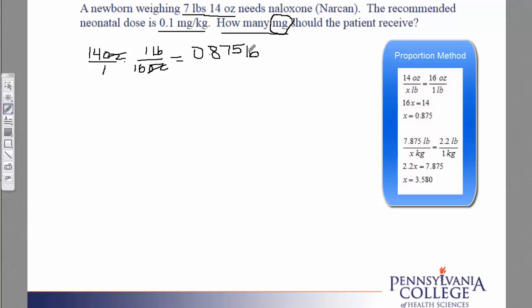Next, we need to take the weight in pounds and convert it to kilograms, because the order, or recommended dose, is per kilogram. So the infant weighs a total of 7.875 pounds. And we get this number from adding the whole number of 7 pounds to the ounces converted over to pounds.